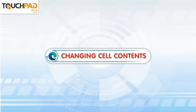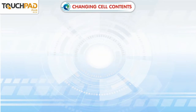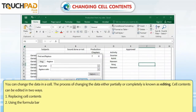Changing Cell Contents. You can change the data in a cell. The process of changing the data either partially or completely is known as editing. Cell contents can be edited in two ways.